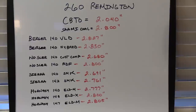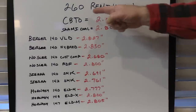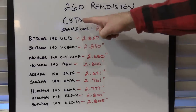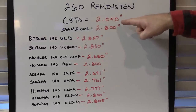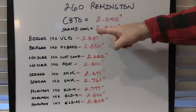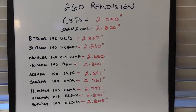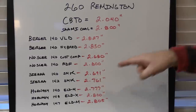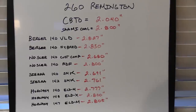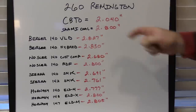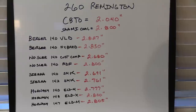This is for my 260 Remington - the rounds I loaded for my big 140 grain velocity test. My cartridge base to ogive length on all of them was 2.040, which is 10 thousandths off the lands in my barrel. The SAAMI cartridge overall length specifies 2.800. If you look down this line, this is the cartridge overall length for every one of those bullets when seated at 2.040 cartridge base to ogive - you can see all the different lengths there.